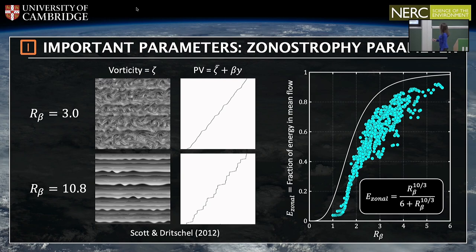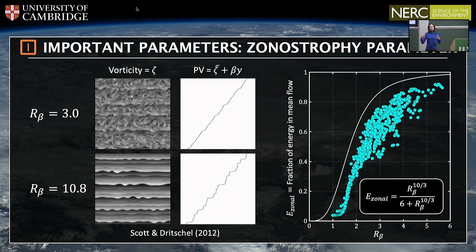Going back to zonostrophy in terms of my simulations: for larger zonostrophy, the fraction of energy in the mean flow — in the jets — is increasing. So at larger zonostrophy, the jets are much stronger relative to the underlying eddy field. There is a theoretical-analytical relationship between these two, but I don't have time to go into that today.